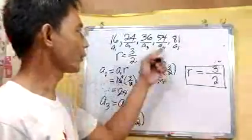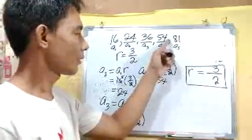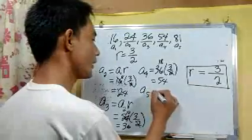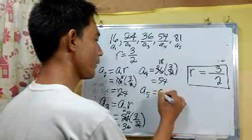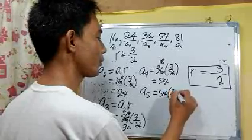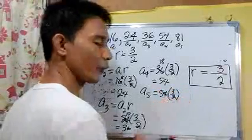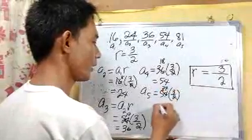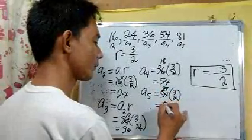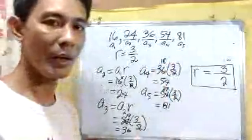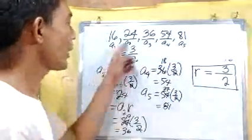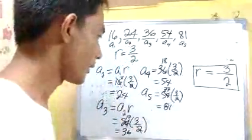To check whether the next term is 81, we find a sub 5: 54 times 3 over 2. 54 divided by 2 is 27, and 27 times 3 is 81. So we are correct, and we are done finding our geometric means.